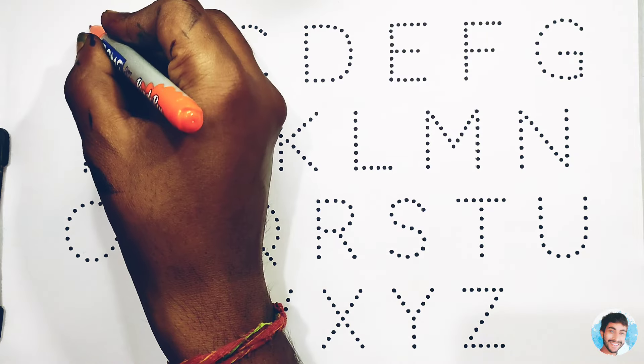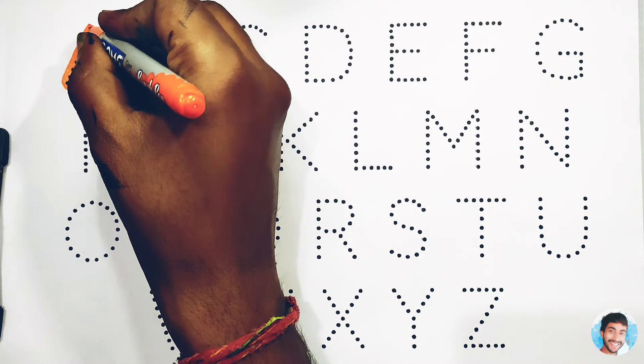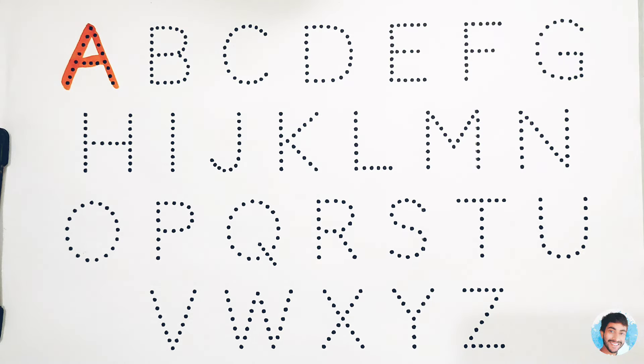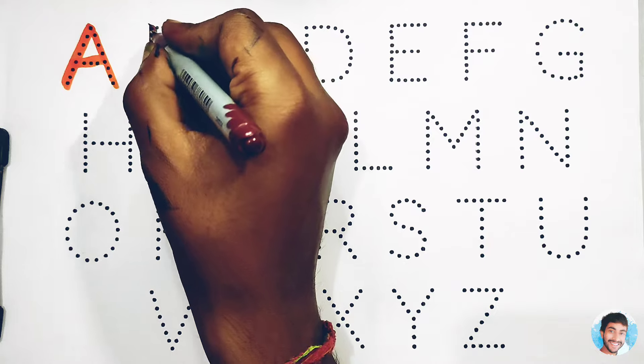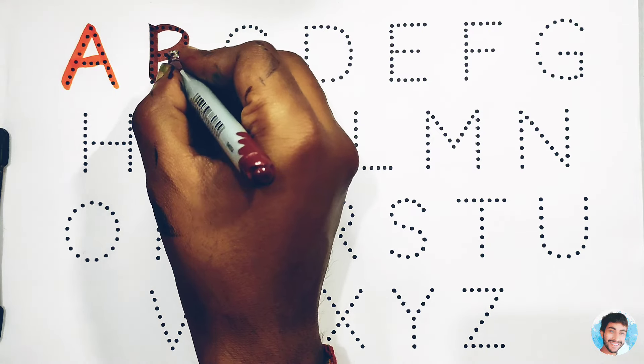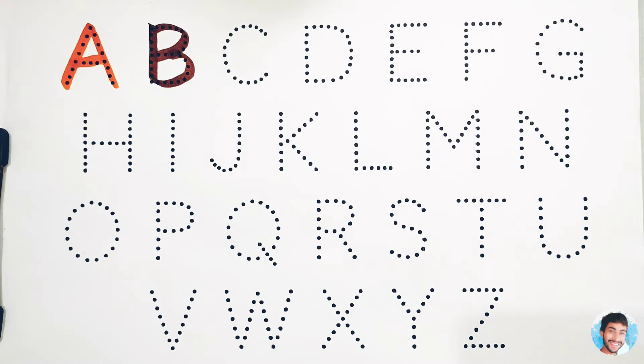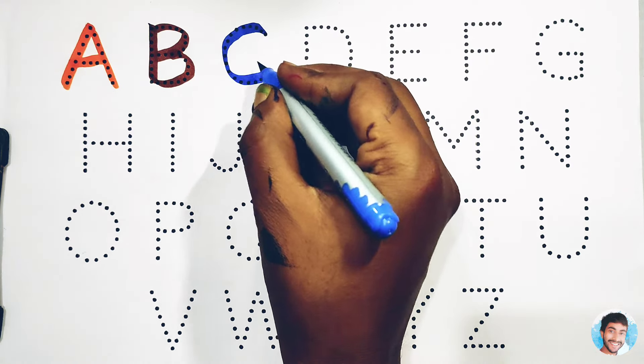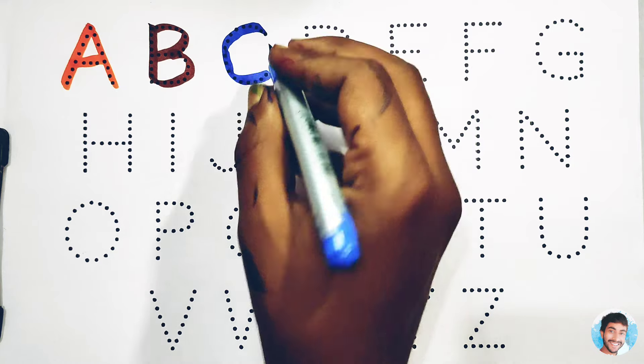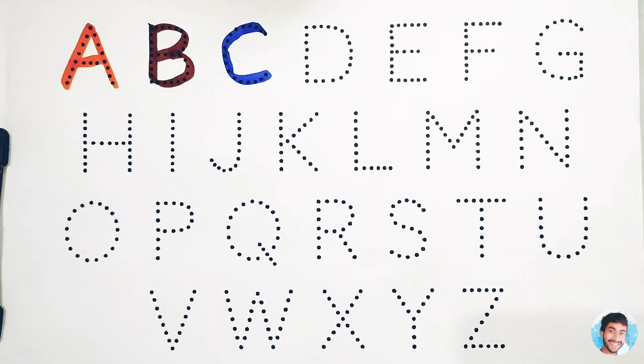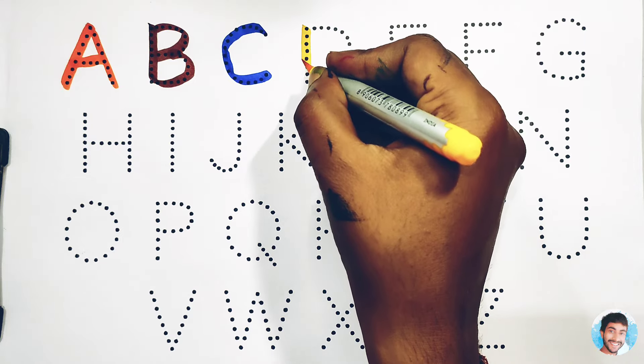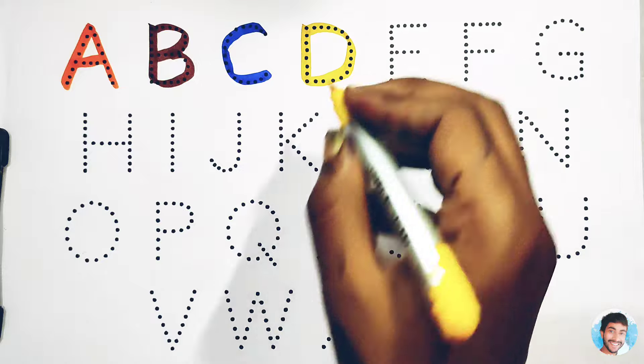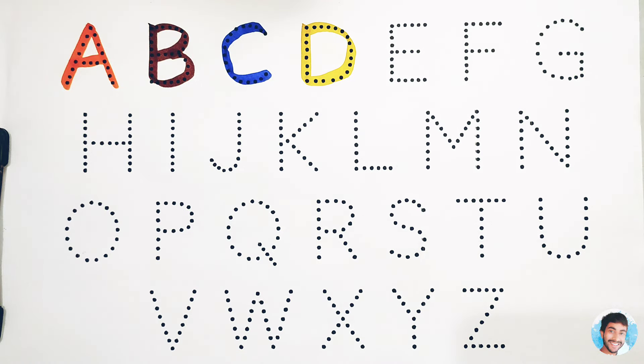Alphabet with Colors. Orange colour A, A for Apple. Brown colour B, B for Ball. Blue colour C, C for Cat, Cat means Billy. Yellow colour D, D for Dog, Dog means Kutta.